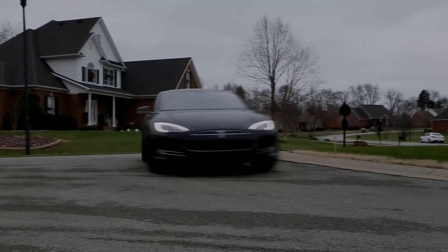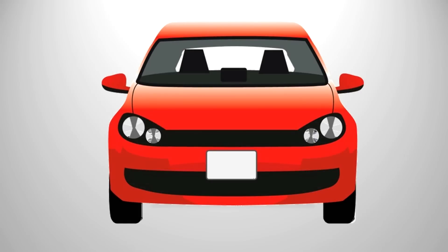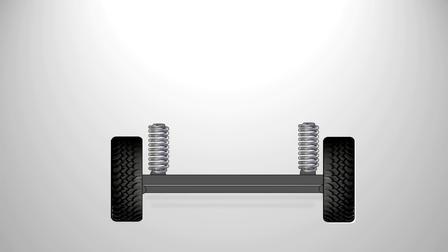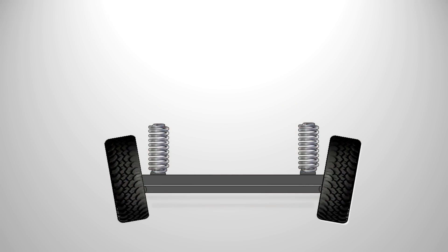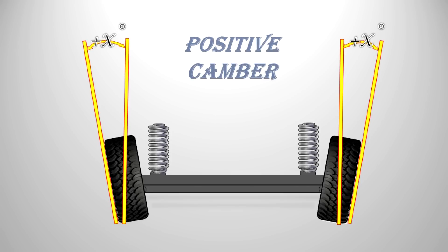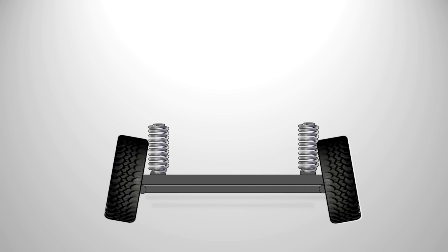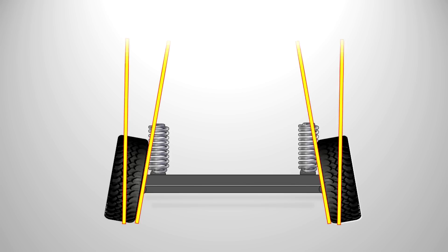Looking from the front of the car, camber is the inward or outward tilting of the wheels at the top. Positive camber is the tilting out at the top and negative camber is the tilting in at the top.